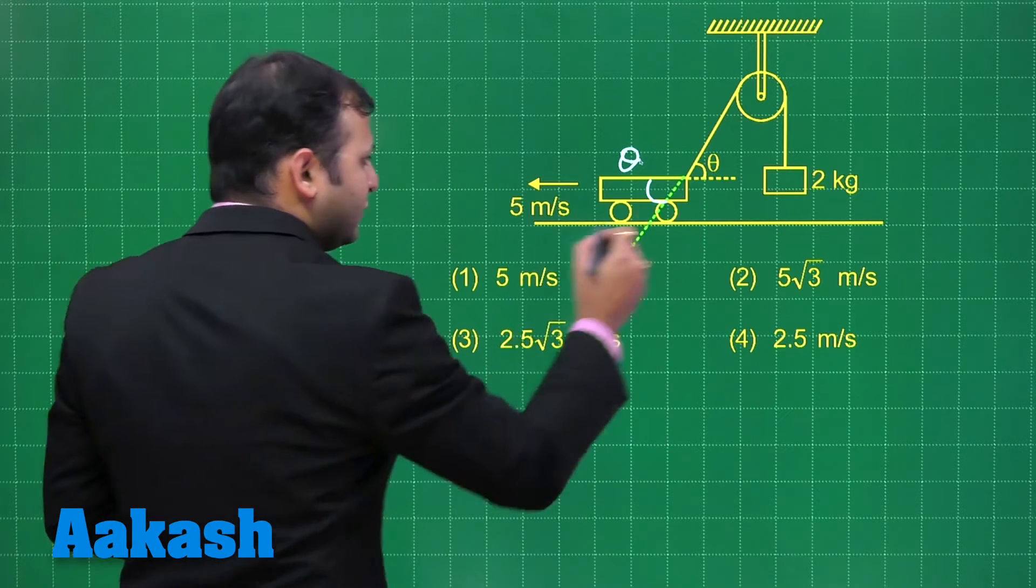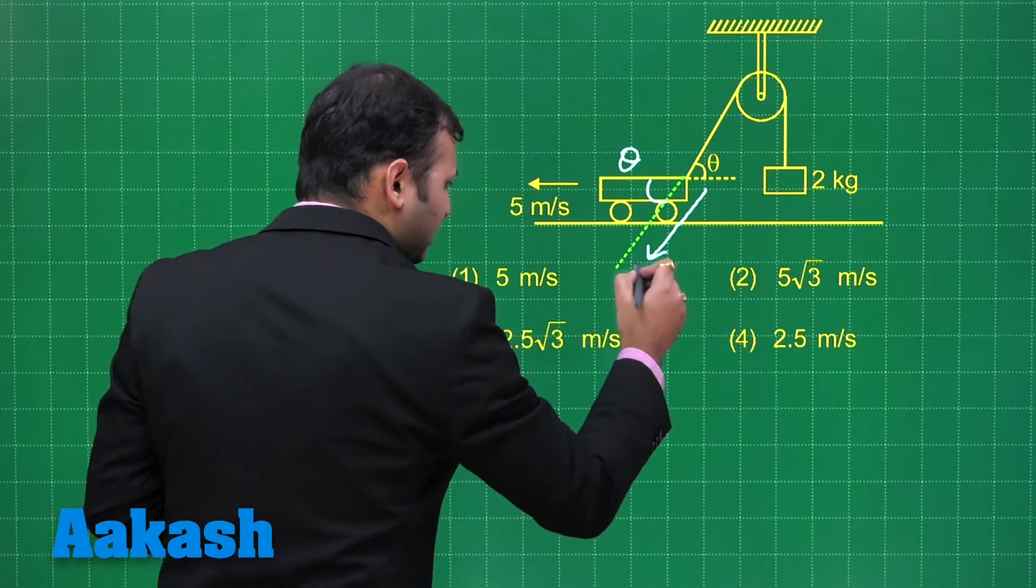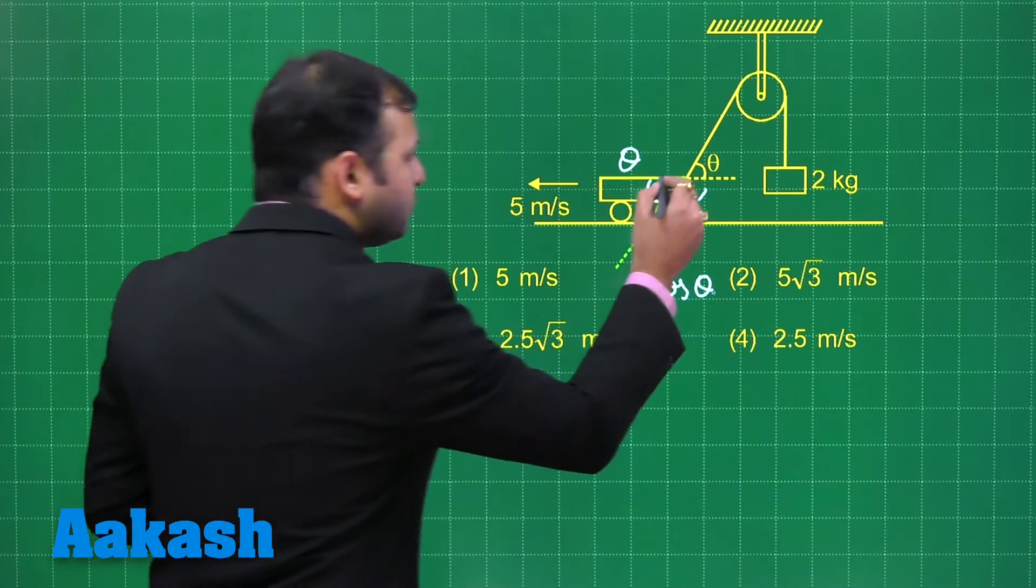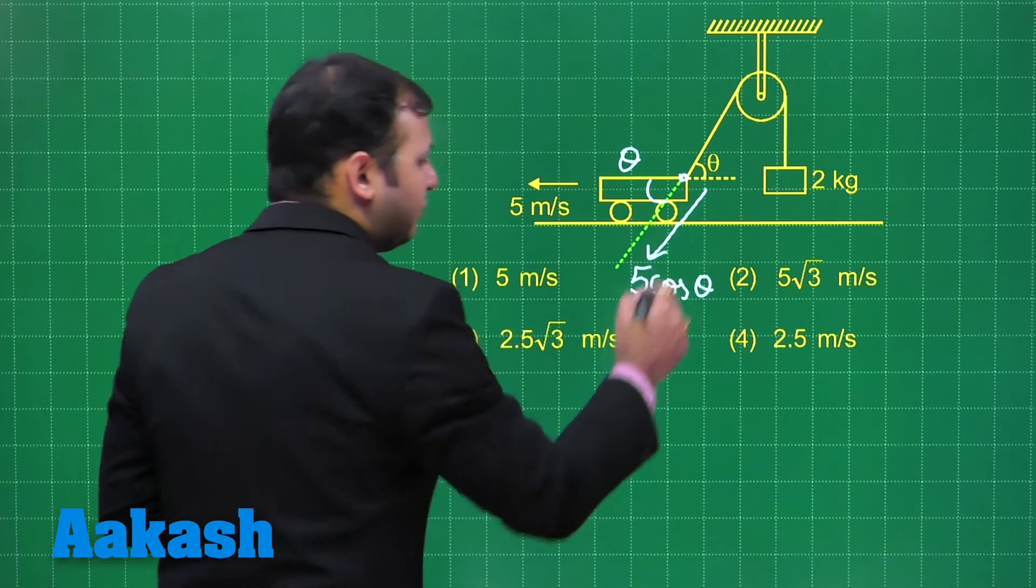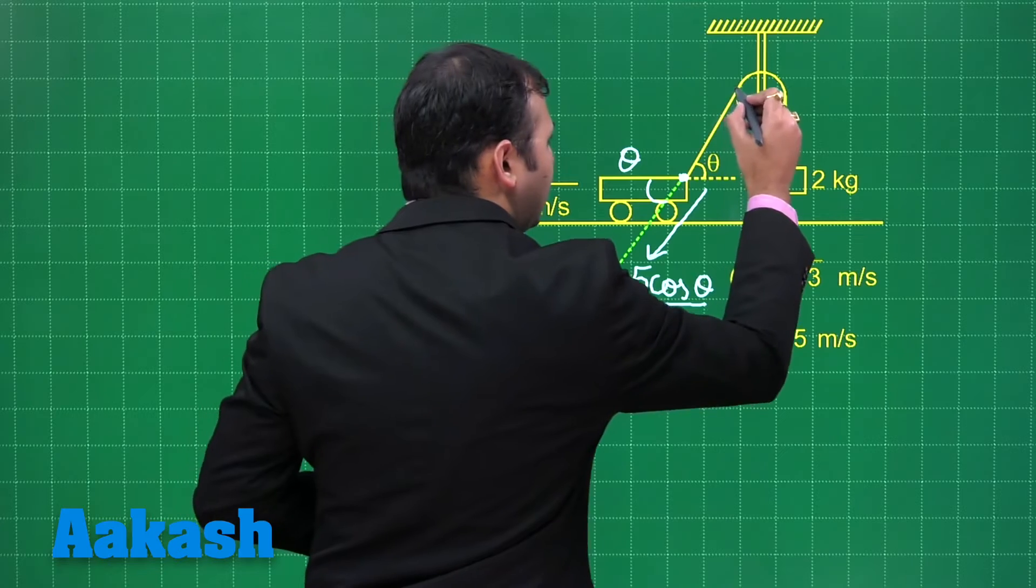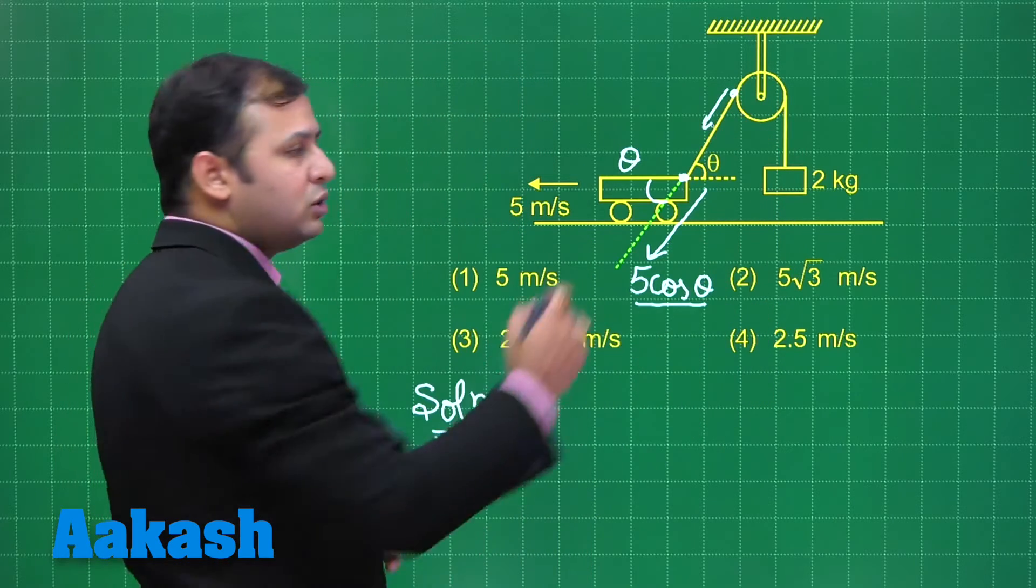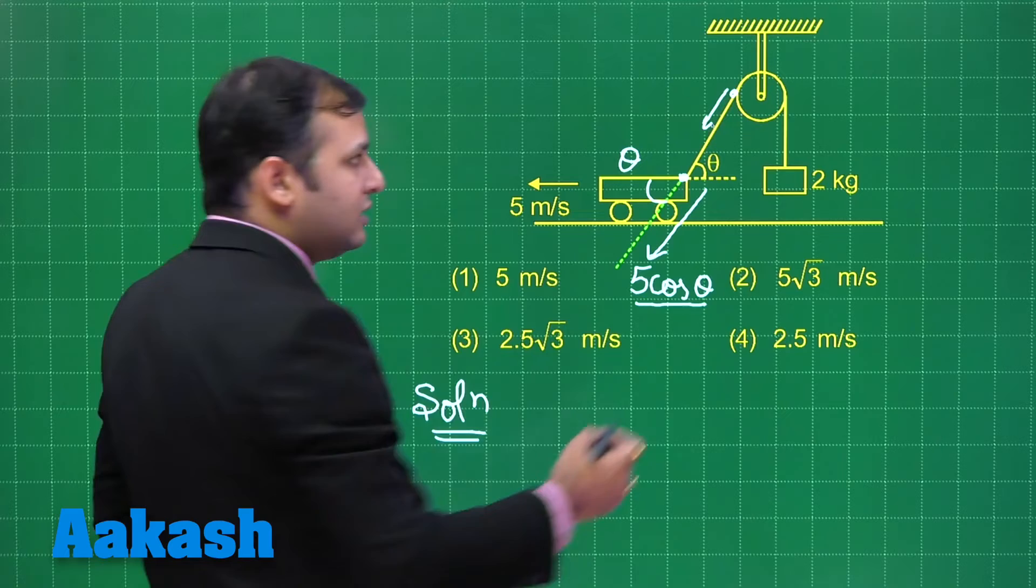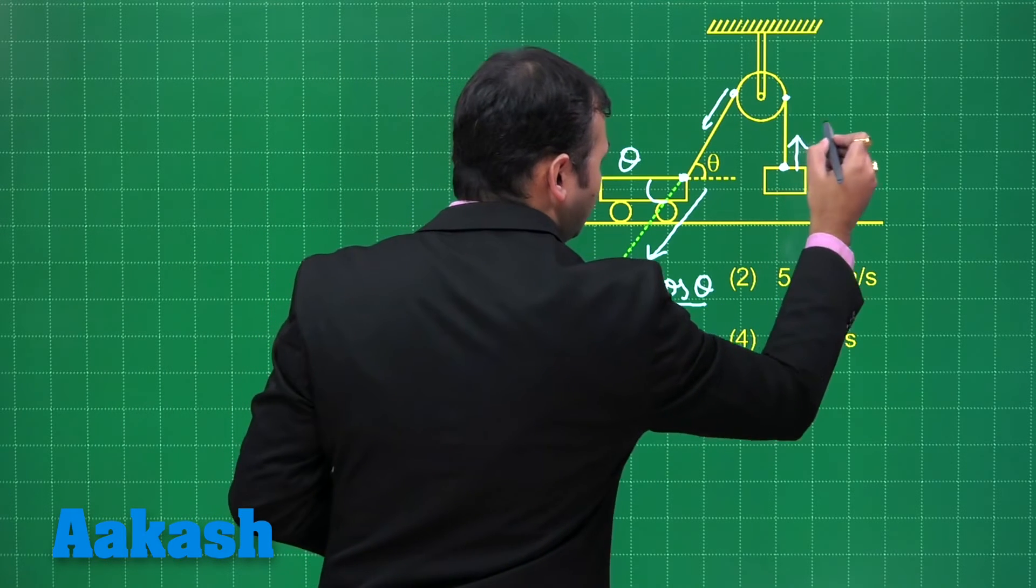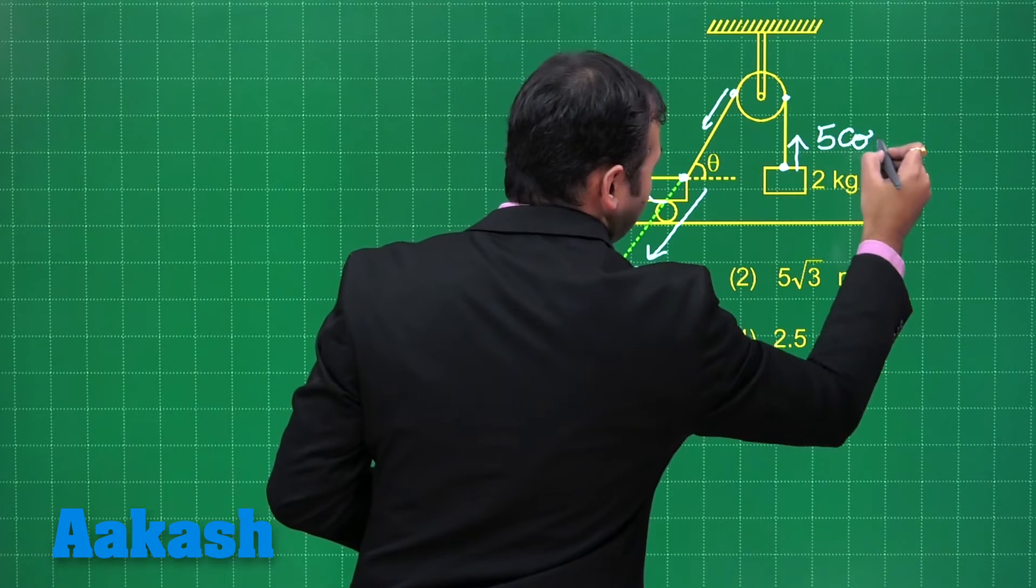If this velocity is 5 m/s, the velocity of this would be 5cosθ along this direction. Now this point of contact here will have velocity of 5cosθ along this direction. Similarly, this particle will also be having velocity of 5cosθ because the distance between two points is fixed. Similarly here and this point as well. So the velocity of this point would be 5cosθ.